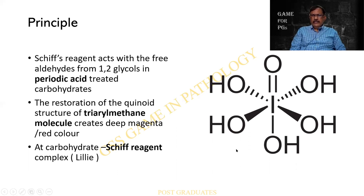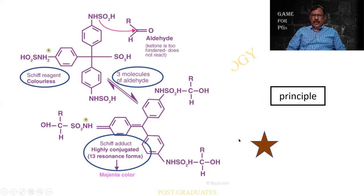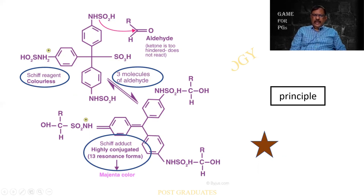This is the structure of the periodic acid. This particular flow diagram is of great importance — there is a lot of complexity. Remember: the Schiff's reagent is colorless, and when it comes in contact with the molecules of an aldehyde, it becomes conjugated, as a result of which it develops a magenta color. Schiff's reagent, aldehyde, and then the conjugate — these three things we will have to remember. This is the basic principle of PAS staining.